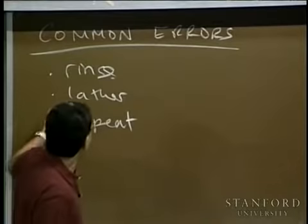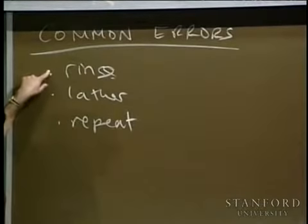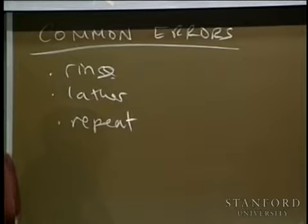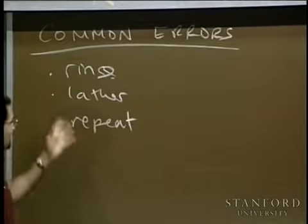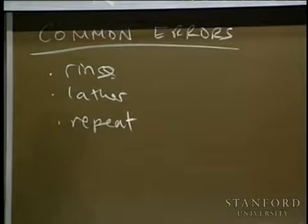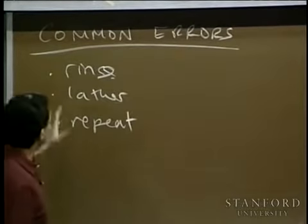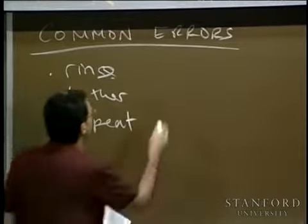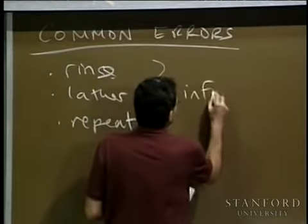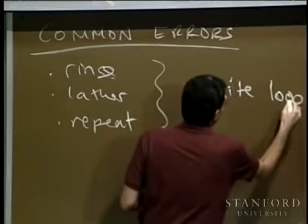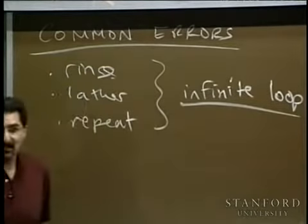Because you rinse, you lather, and you repeat — which means you rinse, you lather, and you repeat — and you just keep doing this. It's like Carol's just taking a shower. You keep telling him to rinse and lather. And this is what we refer to in programming as an infinite loop, which is a loop that keeps going forever. This may come up in your Carol programs.